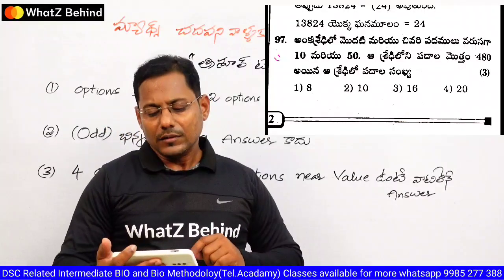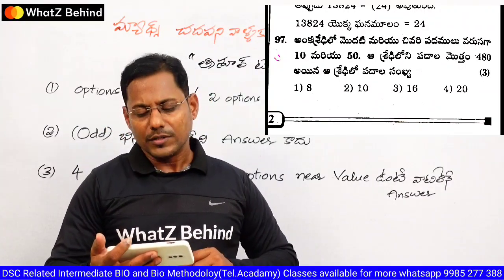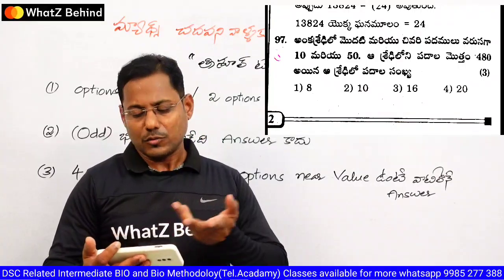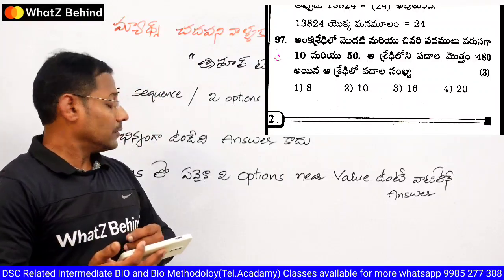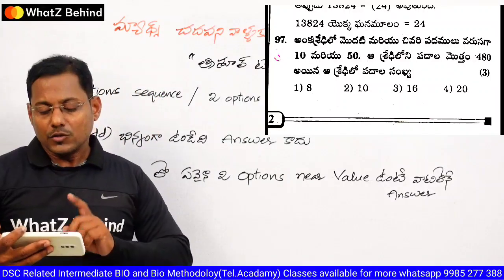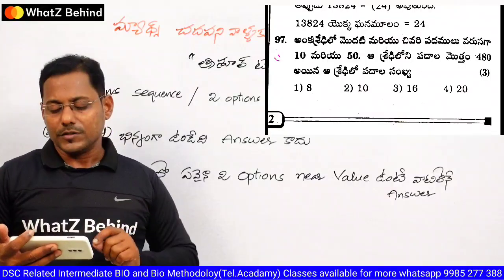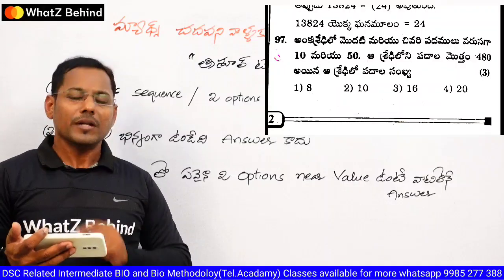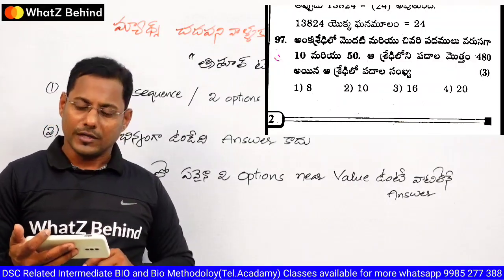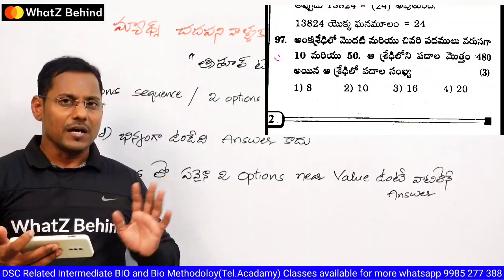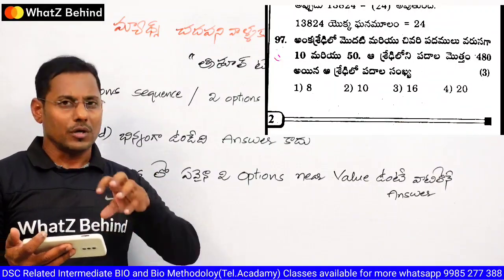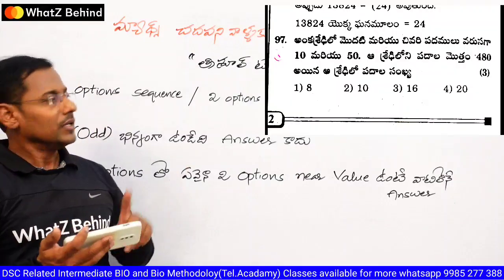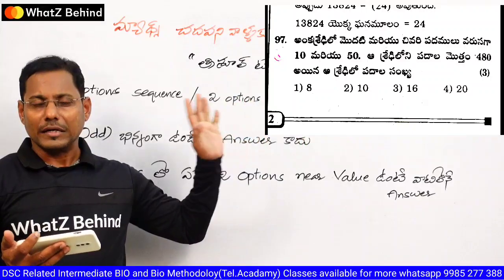Here we will explain the question. If the next sequence is 1, 5, 5, 4 — here we can first explain the answer. You can find the order in increasing order. We have 10, 16, 20 — we have 3 answers.